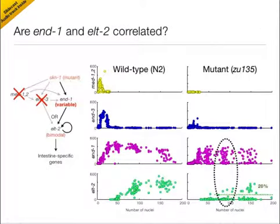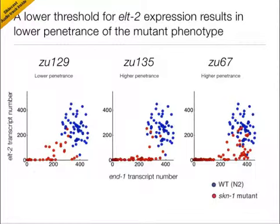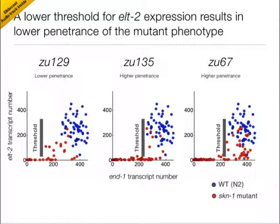In order to test this, we utilized the fact that we measured both END-1 and ELT-2 expression in each embryo, thus allowing us to look for correlations between END-1 and ELT-2 expression in the mutant strain. Indeed, we saw such a correlation in all the skn-1 mutant strains we examined, finding that high levels of END-1 expression were required for expression of ELT-2. Interestingly, we found that the different penetrances of the various skn-1 mutant alleles arose from different thresholds for ELT-2 activation.